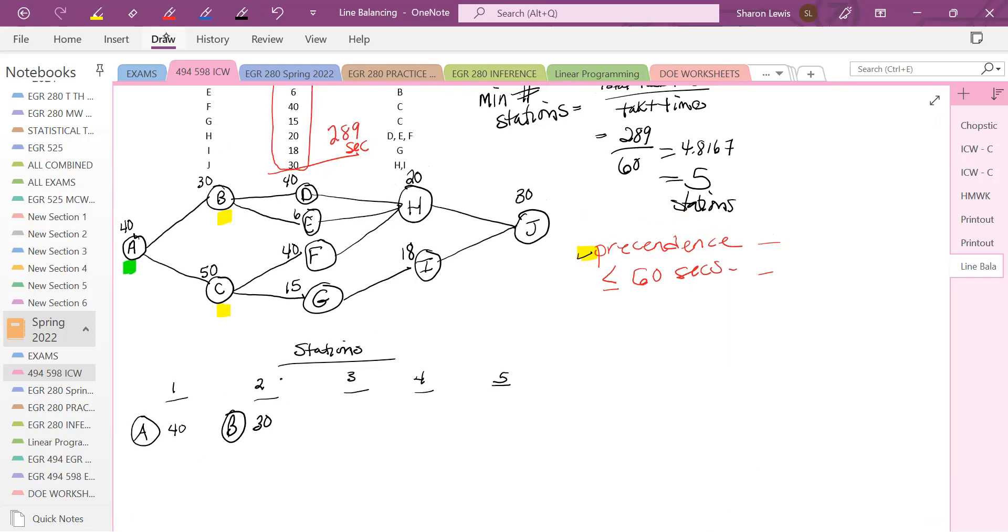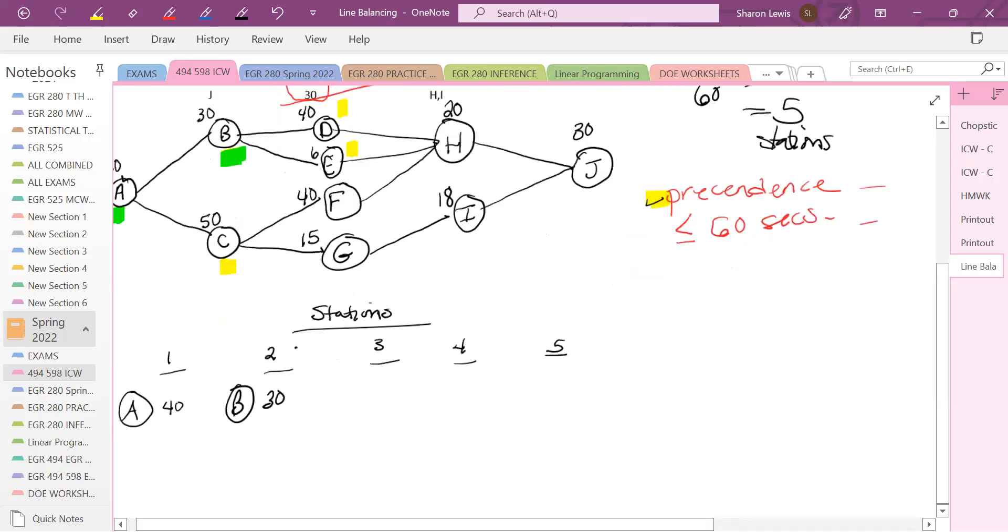So now let's mark B as it's been assigned and let's look at candidate tasks. So C can go in, but now since B is done, D can go in and E can go in. Just D, E, and C. So using shortest processing time, we've got D at 40, E at 6, and C at 50. The shortest one is 6. So that's E. So E and it's 6. So I'm at 36 seconds right now.